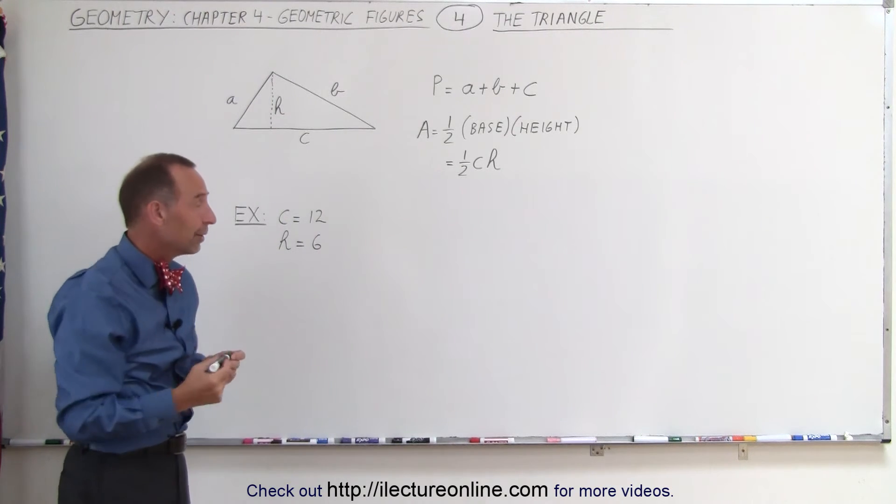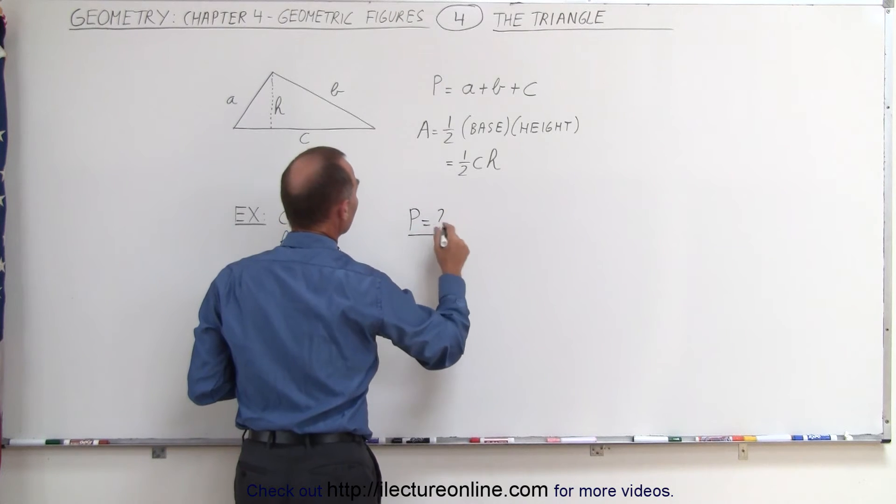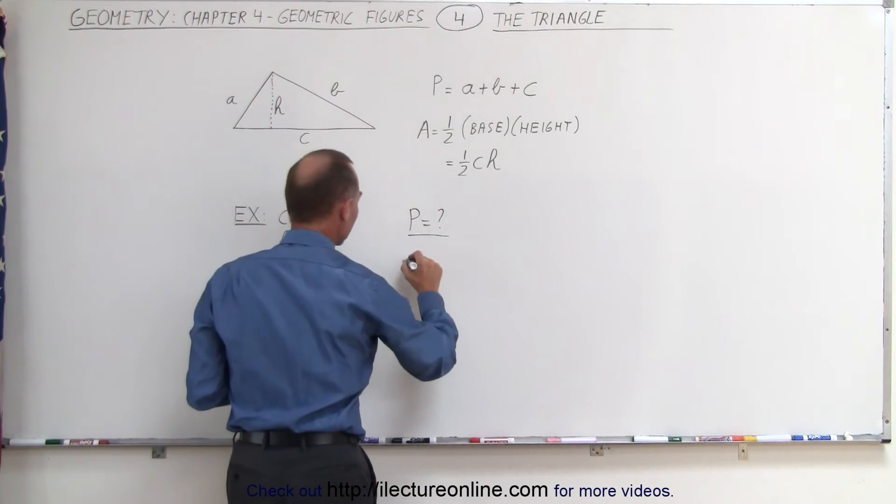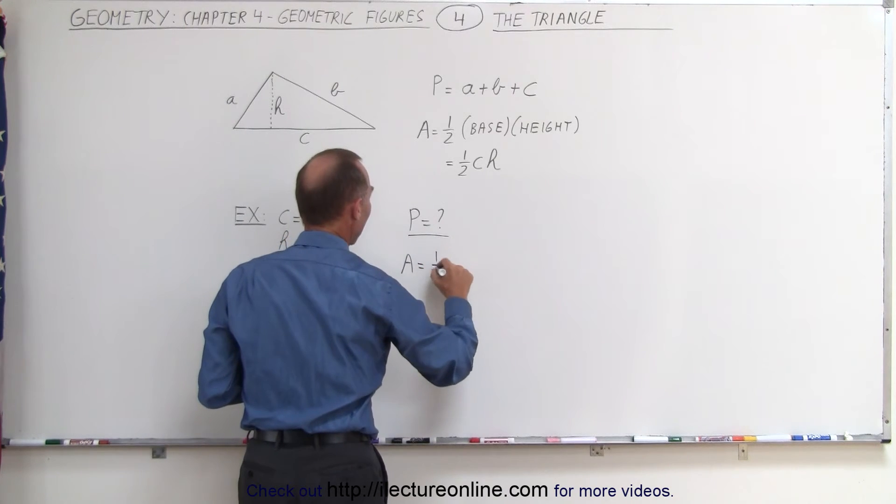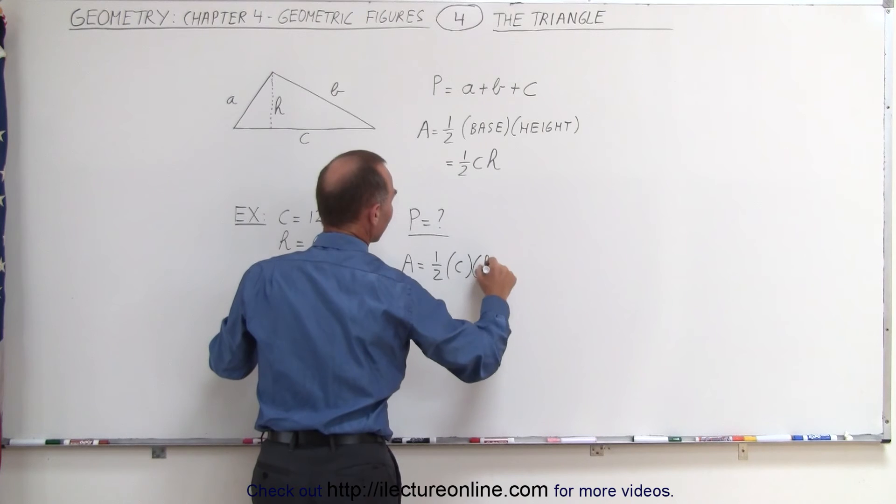So what we cannot do here is find the perimeter. The perimeter will be unknown because we don't know the length of A and B. But to find the area, we can do that. That is equal to one-half times the base, which is C, times the height, H.